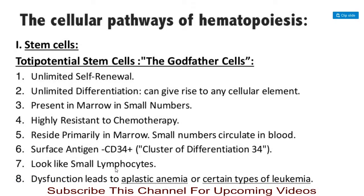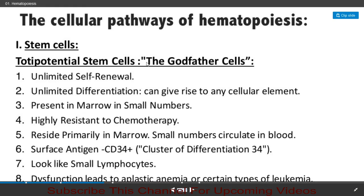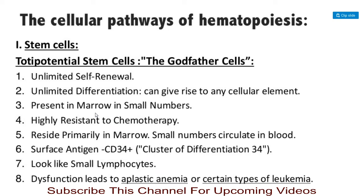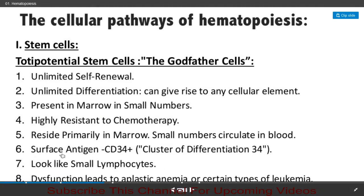The first are totipotent stem cells, also called the 'godfather cells.' These cells have unlimited self-renewal and unlimited differentiation, meaning they can give rise to any cellular element. They are present in bone marrow in small numbers and are highly resistant to chemotherapy. They reside primarily in bone marrow, and small numbers circulate in the blood.